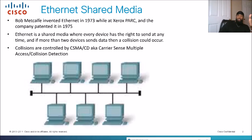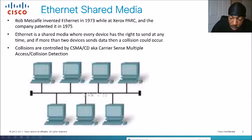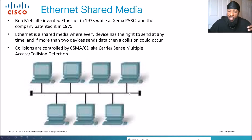Ethernet is a shared media where every device has the right to send or transmit data at any time. If more than two devices send data, a collision could occur. Looking at this topology, we have cables — which we call media — and all these devices are interconnected to one shared media. That's why it's called shared media.